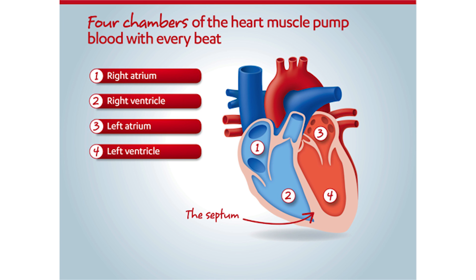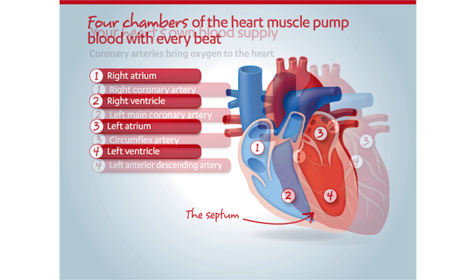Used or deoxygenated blood returns to the heart via the veins to the right atrium. It then travels to the right ventricle and is pumped over to the lung, where it picks up oxygen. This freshly oxygenated blood returns to the heart in the left atrium and is then pumped out to the rest of the body by the left ventricle. The left ventricle is the main pumping chamber of the heart.